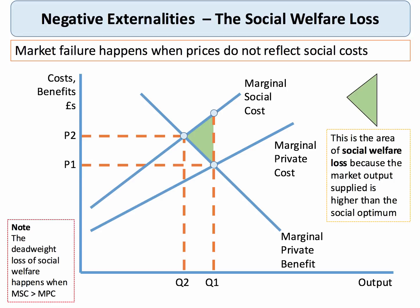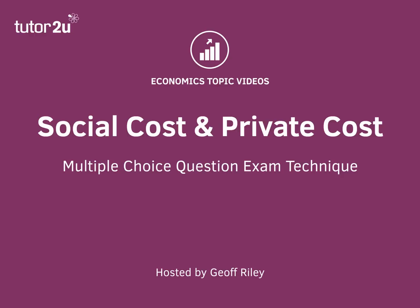The free market equilibrium is at Q1, where marginal private cost and marginal private benefit are equated. But actually we'd prefer output to be less at Q2, because we know there are external costs of production. So we'd prefer the price to be higher and the output to be lower. The green shaded area shows the loss of social welfare due to the market failure. There's your externalities diagram, which helps to think about the question on social and private cost.